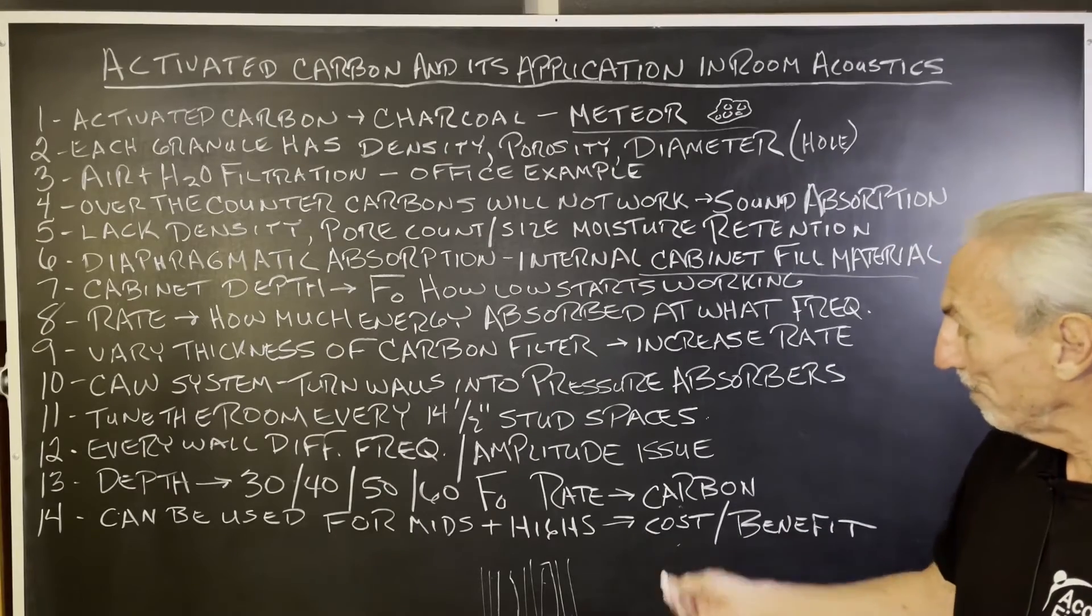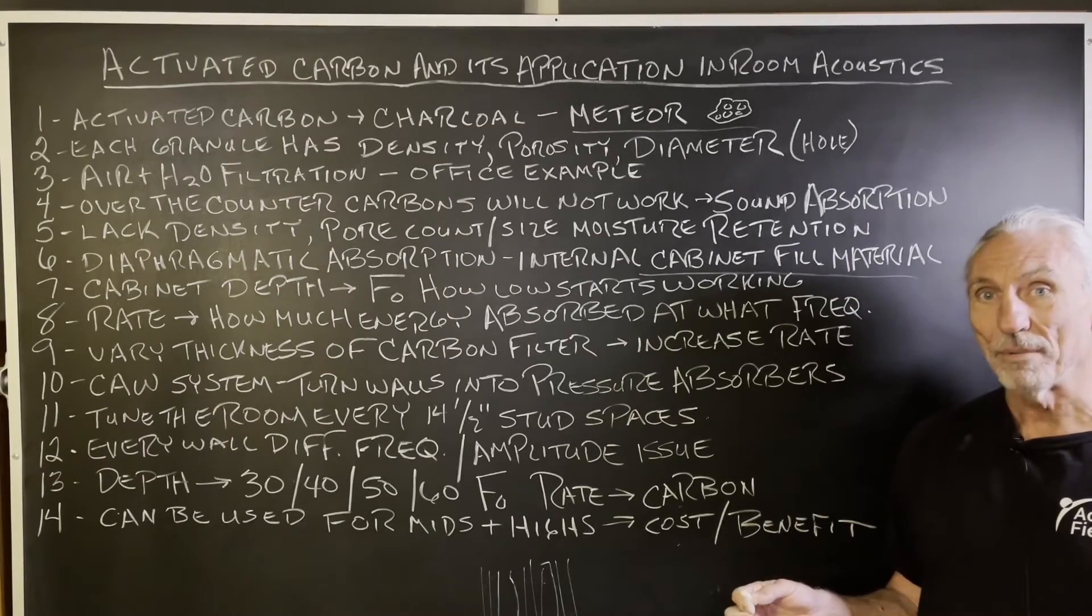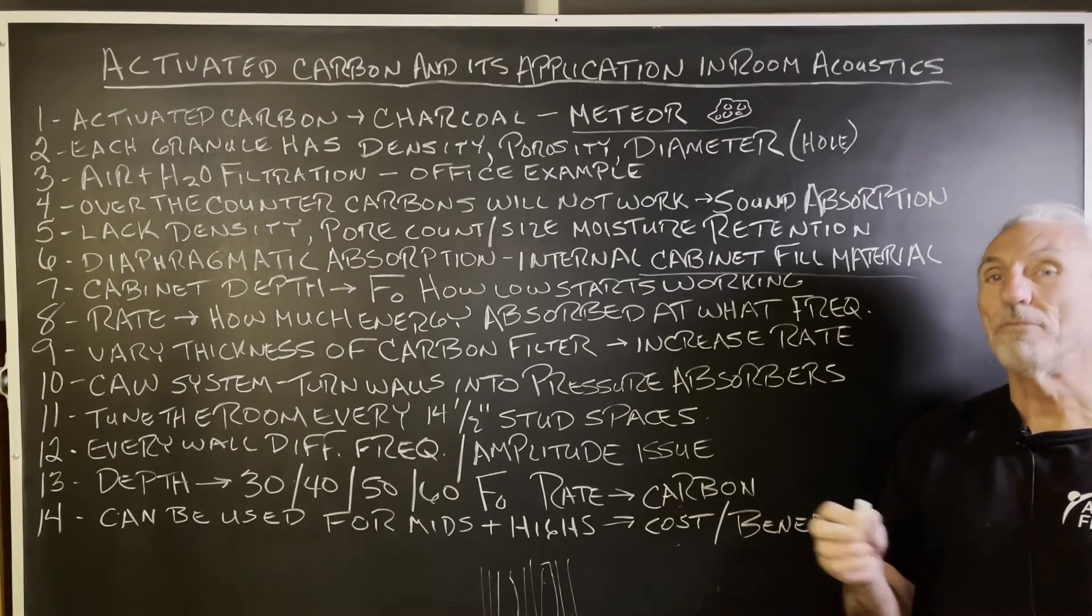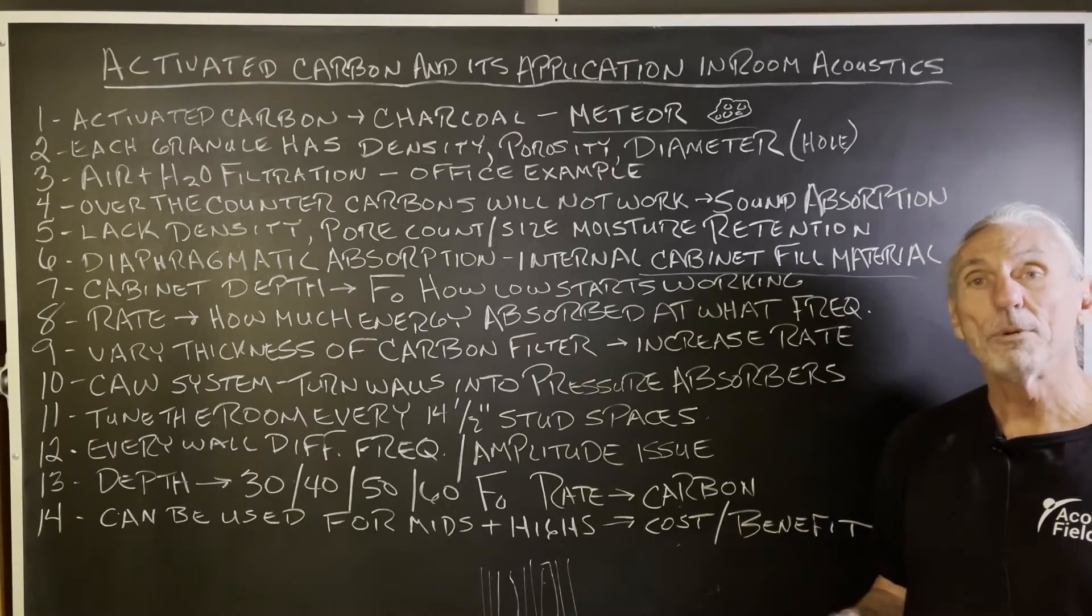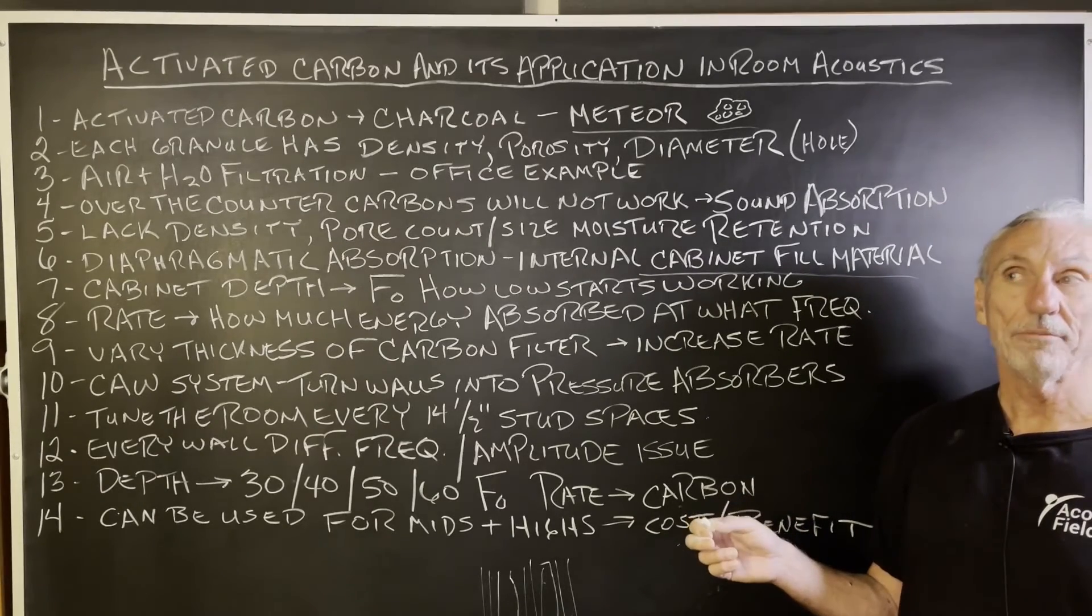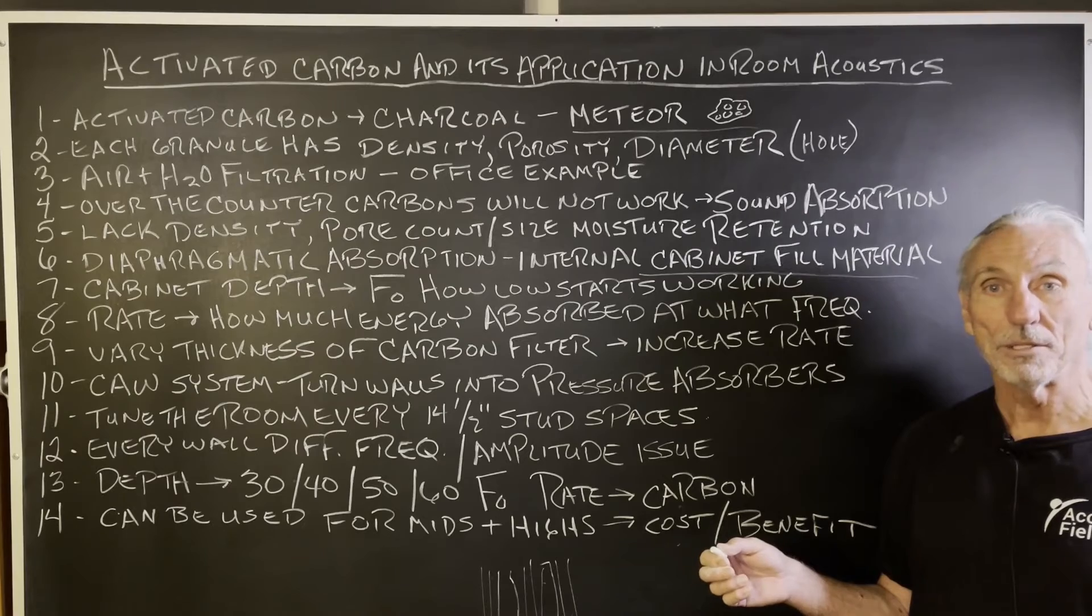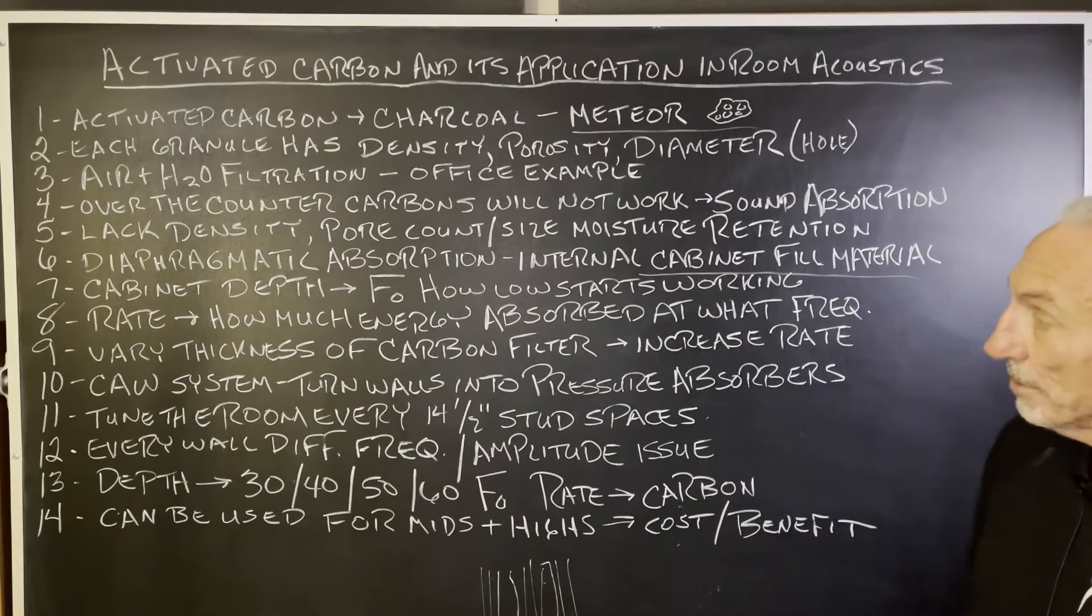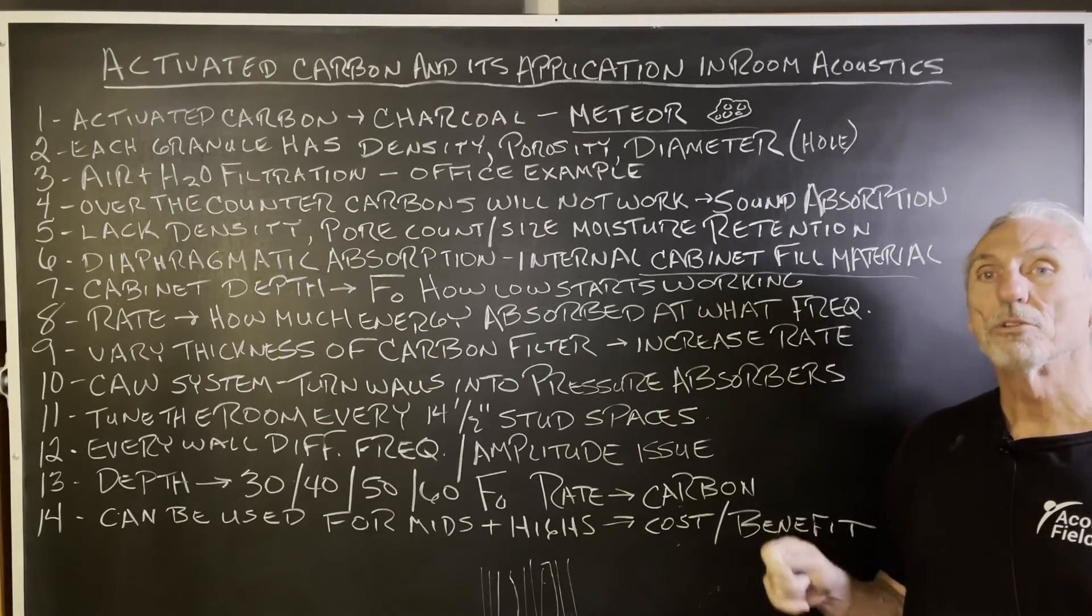So you can use it for middle and high frequency absorption, no problem. However, you have to weigh out the cost benefit ratio. It's not cheap. It's not cheap to manufacture, as you can imagine, when you have all these variables to control. So maybe foam technology would be more cost effective. It's definitely lighter in weight. Carbon is very heavy. I think we put 65 pounds of it inside our diaphragmatic absorbers. A middle and high frequency absorber might weigh 20, 30 pounds. It might produce the same frequency response as a two inch piece of foam, which is much lighter and much more economical to work with. So you have to look at the cost benefit, but it can be used for middle and high frequency. But in our processes, we use it for low frequency and we use it to control the rate of absorption.